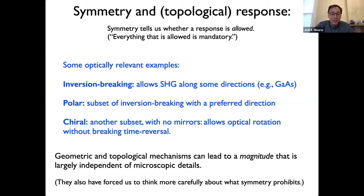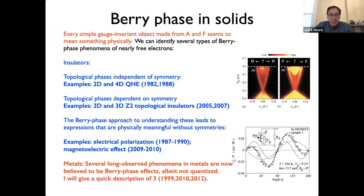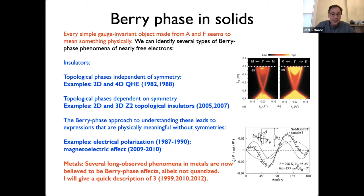Optics has not been thought of much in terms of Berry phases until the last few years. I'm going to write down objects in the Brillouin zone with the same mathematical structure as the electromagnetic gauge field — using the same symbols like A for the vector potential and F for the field strength. Pretty much any allowed gauge-invariant object I can make out of these Berry phase gauge fields has some physical consequence.